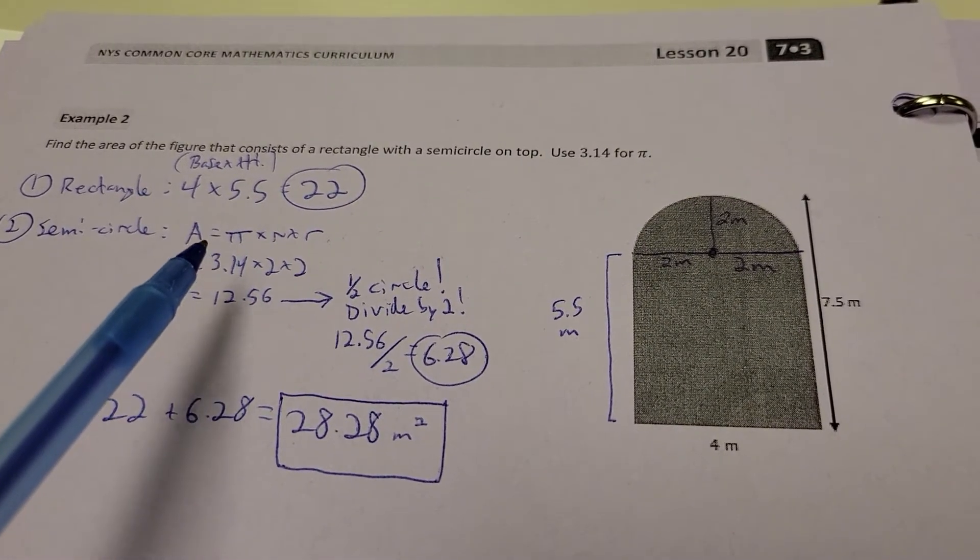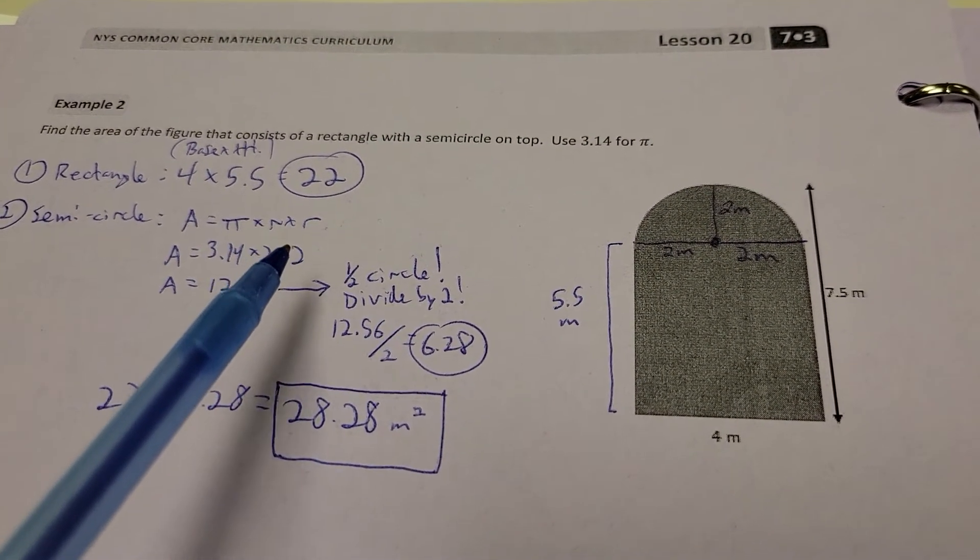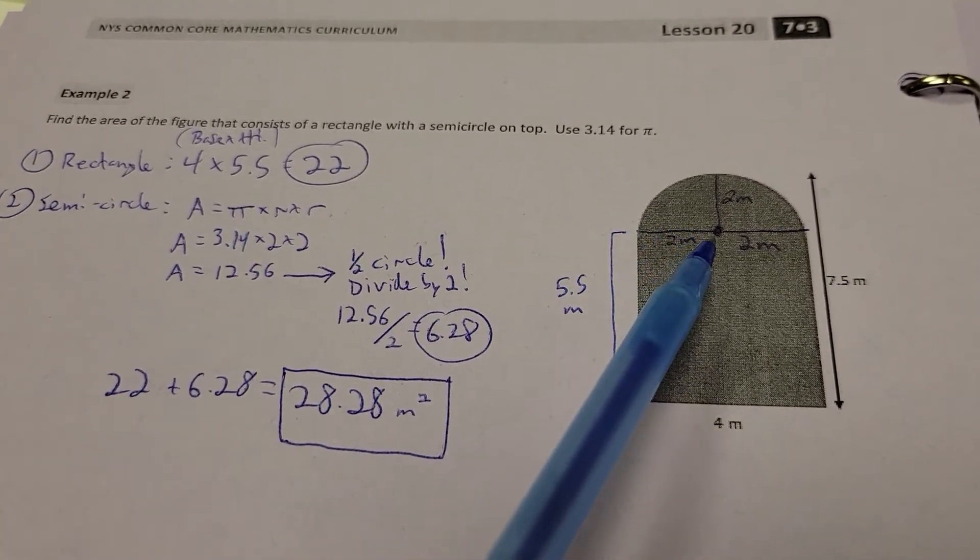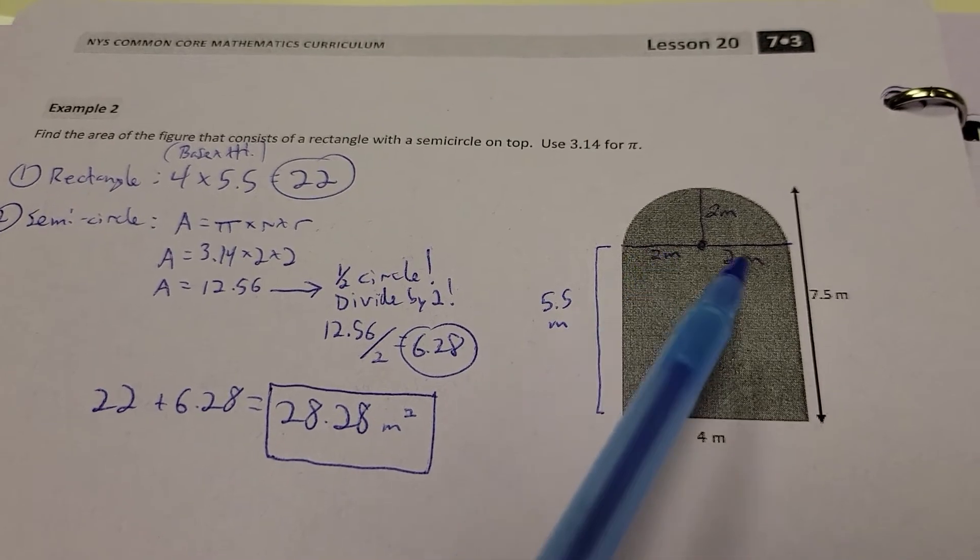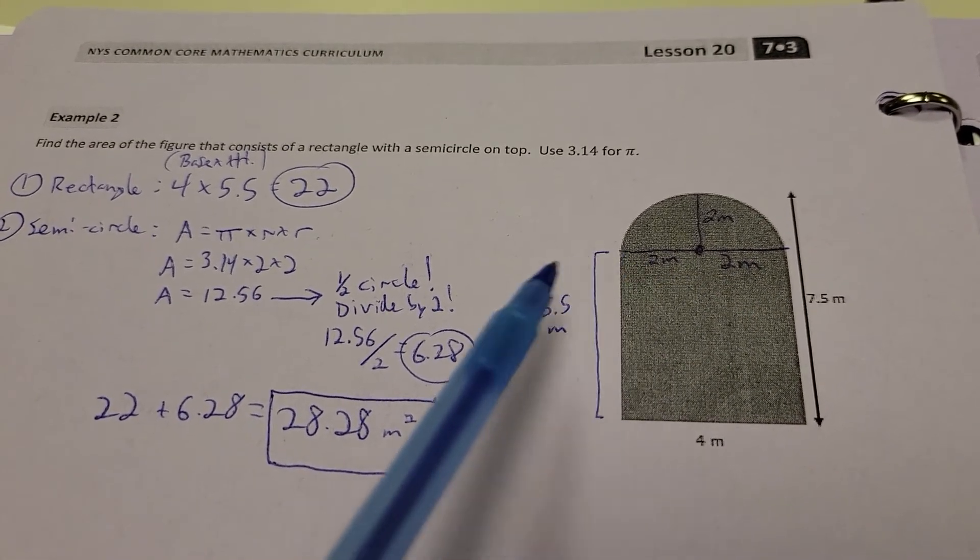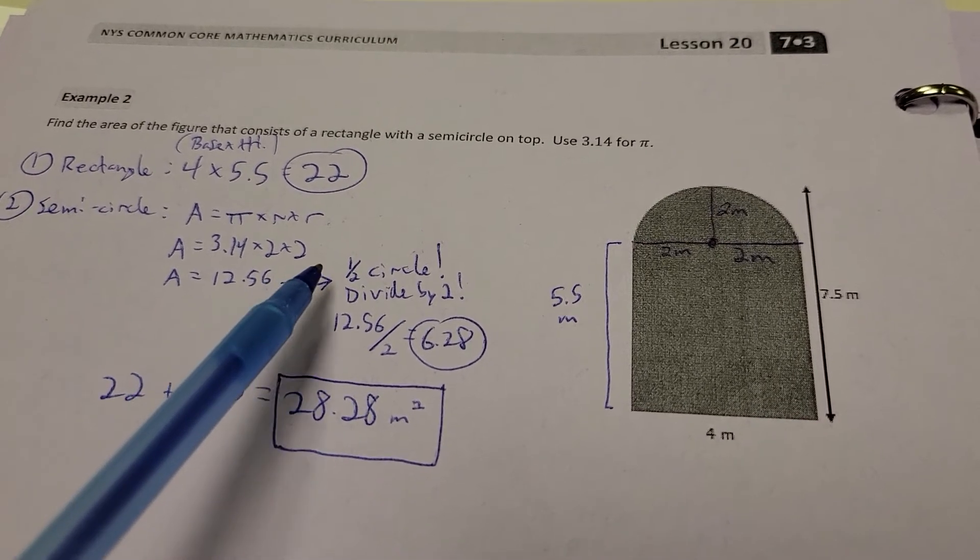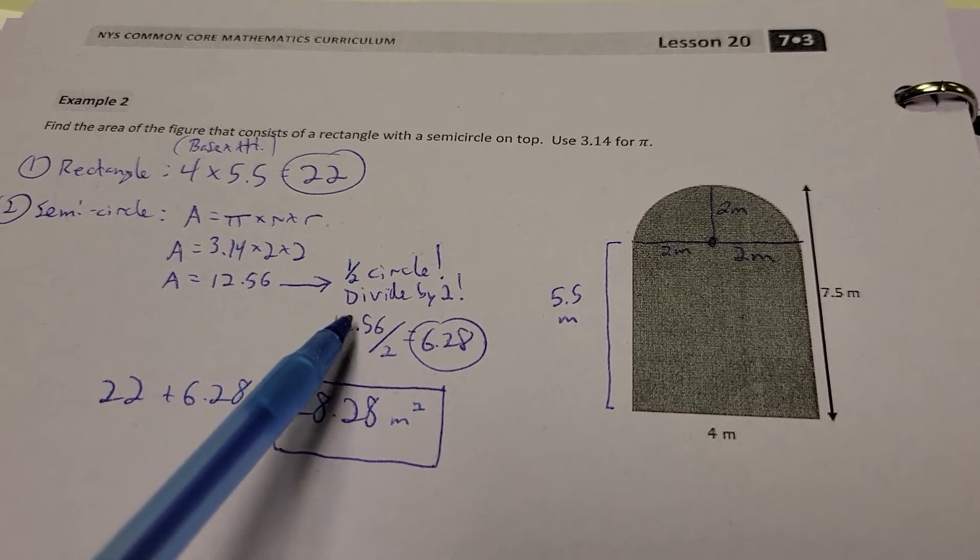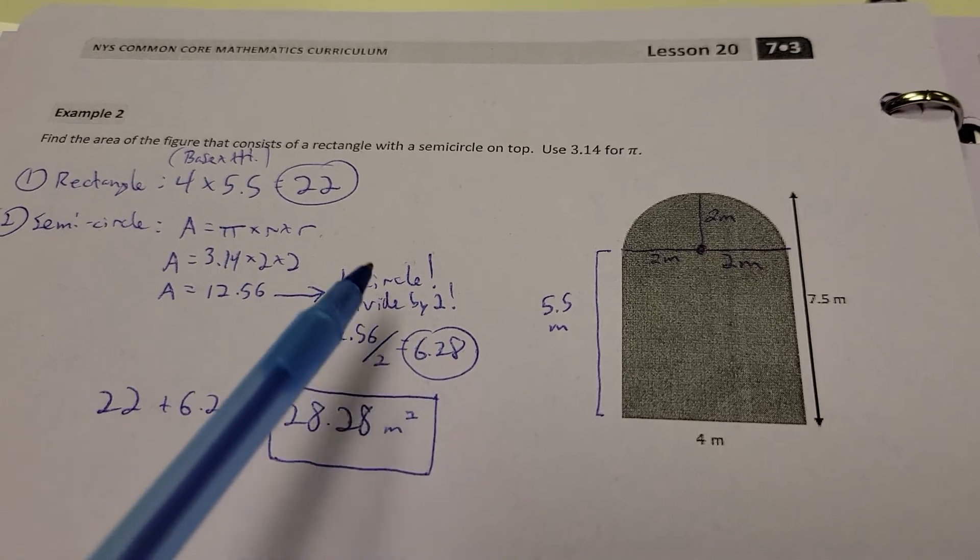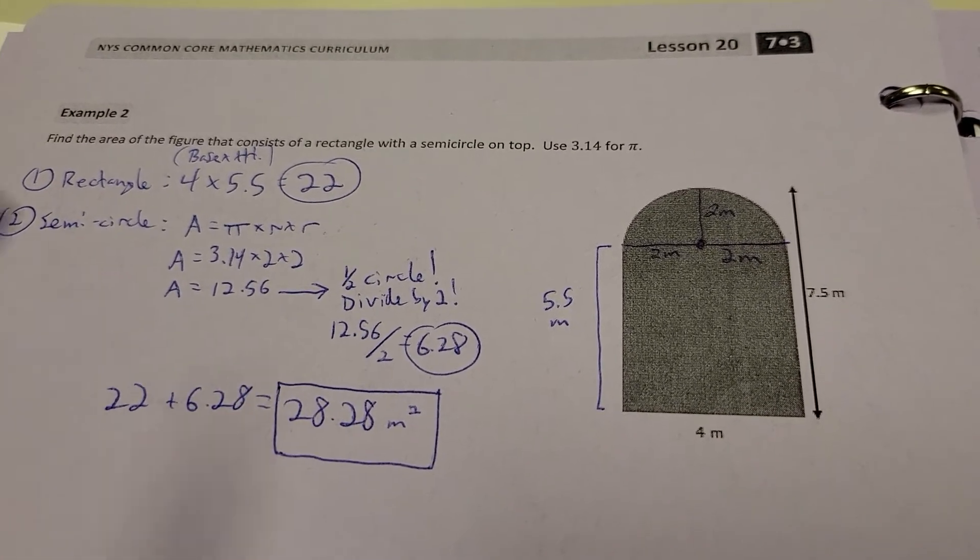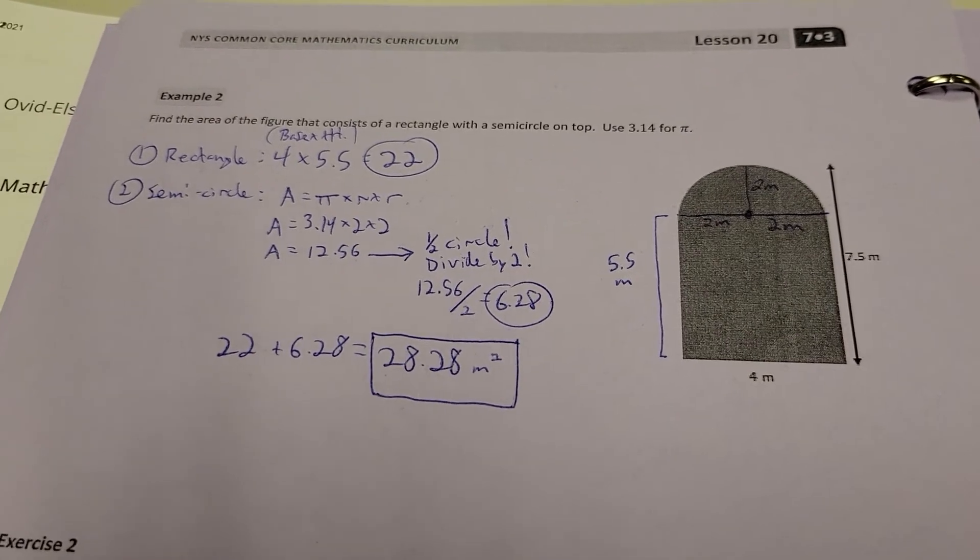Now, for the semicircle, pi times radius times radius. So we'll just use 3.14 for pi. That's what they told us to do. And remember from my picture here, the radius is going to be 2 because all the way across is 4, so that means halfway across would be 2. So 3.14 times 2 times 2 gives me 12.56. But it's a half circle, so divide by 2. 12.6 divided by 2 is 6.28. So take your two answers, the rectangle and the half circle, add them up. Overall area, 28.28 square meters.